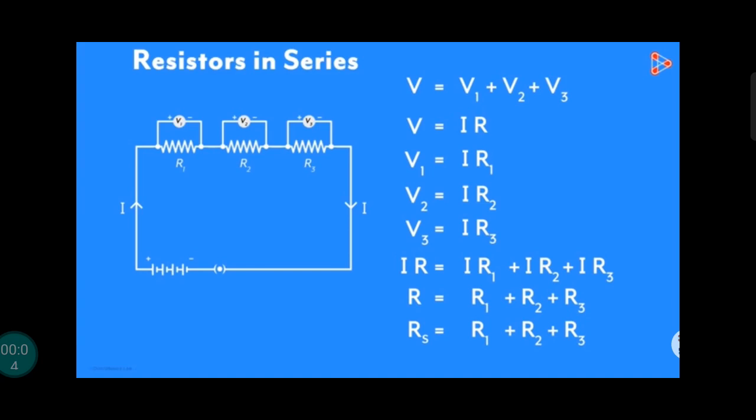Consider three resistors R1, R2, R3 are connected in series to a voltage source battery across the terminals, positive and negative.